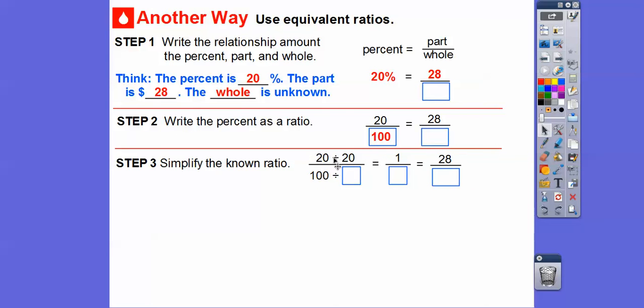So if we divide 20 divided by 20, and then 100 divided by 20, whatever we divide on top, we've got to divide on bottom, it gives us 1 over 5.